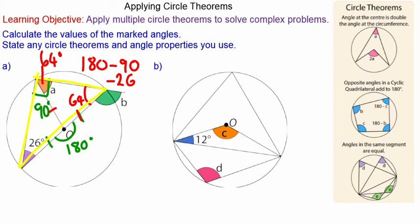Angle B lies along a straight line with the 64 degrees, so that will be the difference between 180 and 64, which is 116 degrees.